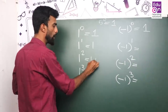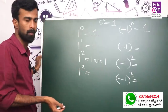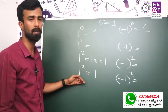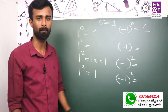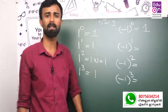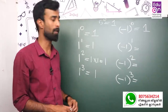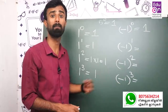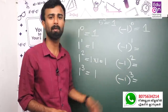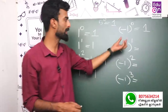1 is always 1. Whatever power you raise 1 to, the answer is 1. For example, 1 raised to 99 is 1. 1 raised to 0 is also 1. Even 1 raised to 1 raised to 0, or 1 raised to 11, is still 1. 2 raised to 0 is also 1.